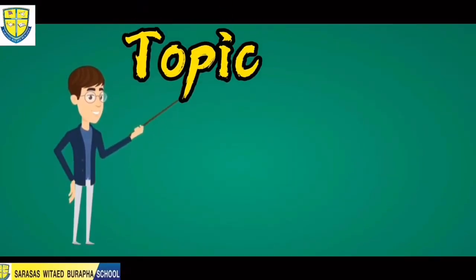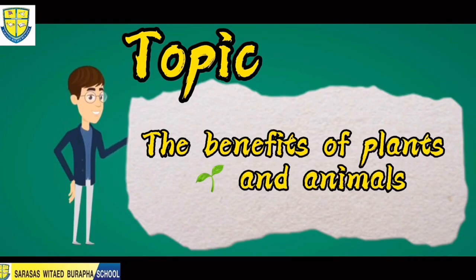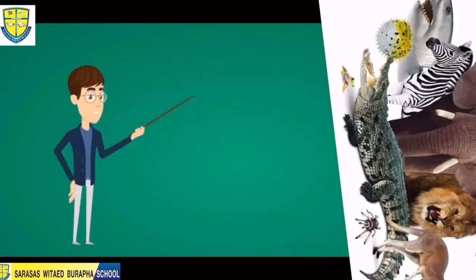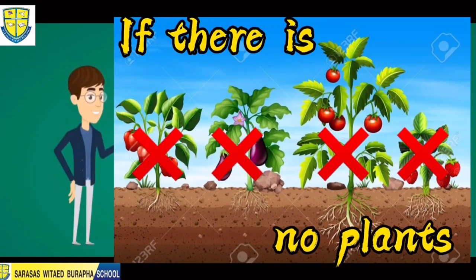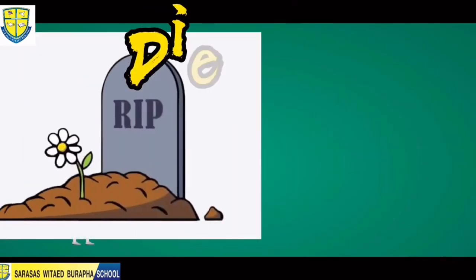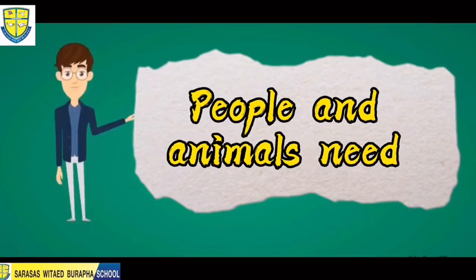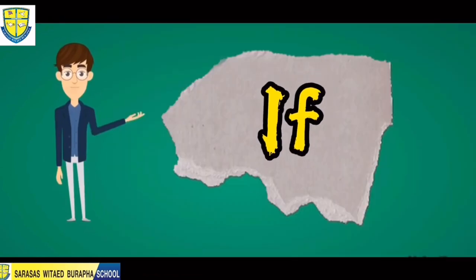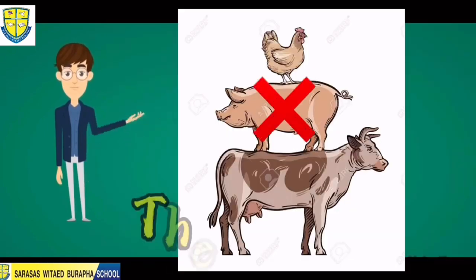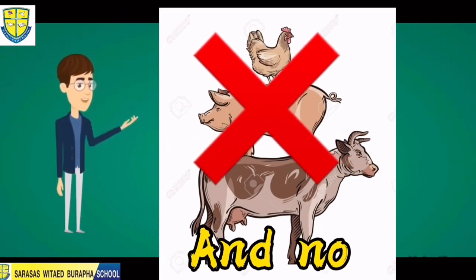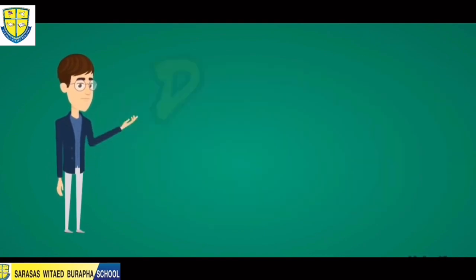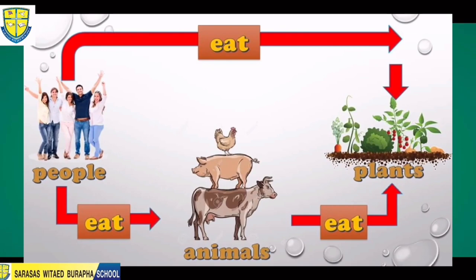Our next topic for today is the benefits of plants and animals. People and animals need plants because if there are no plants, people and animals will die. People and animals need plants for food. If there are no plants, then there are no animals. If there are no plants and no animals, then people have no food and will die. This is a simple illustration of the importance of plants to animals and people.